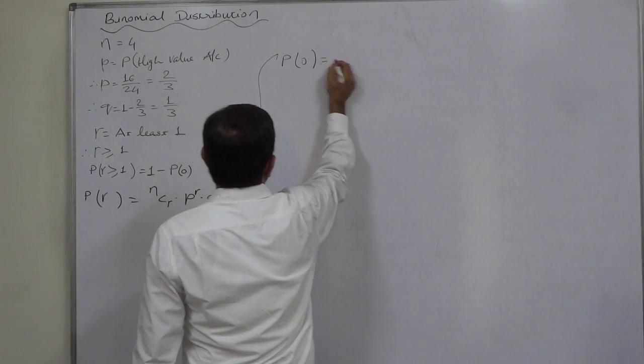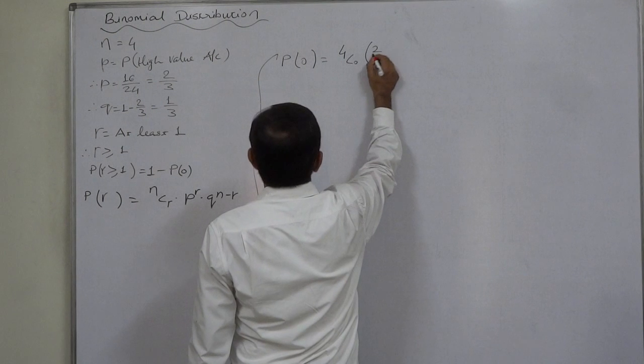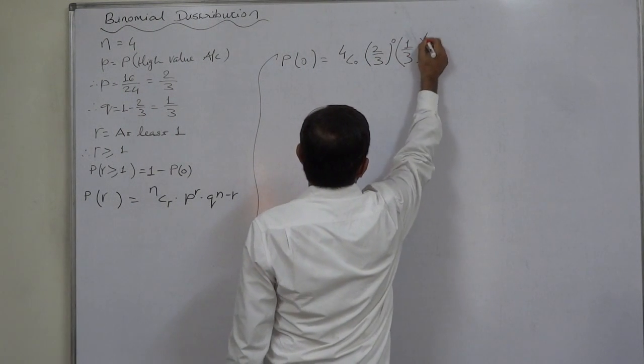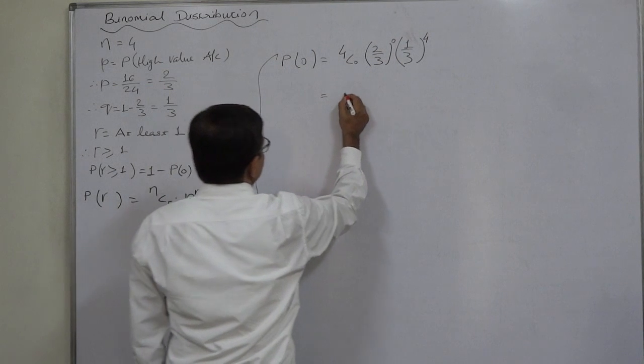P(0) equals to 4C0 into 2/3 raise to 0 into 1/3 raise to 4 minus 0, 4. So 4C0 is 1.